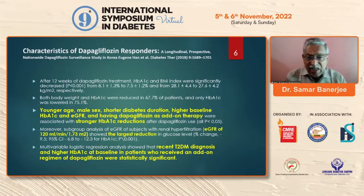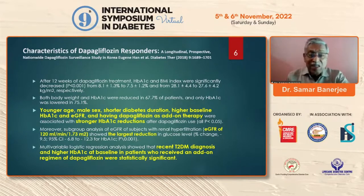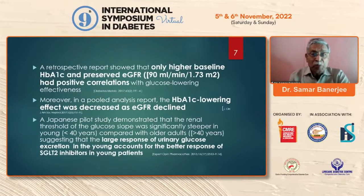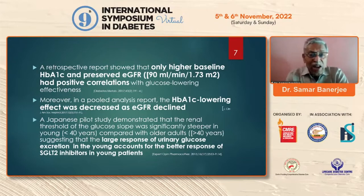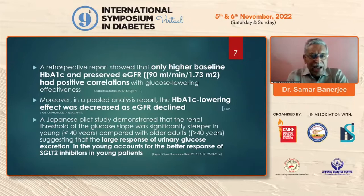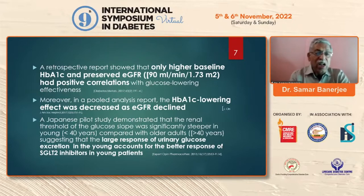Multivariate logistic regression analysis showed that recent type 2 diabetes diagnosis — meaning if you start early — and higher A1C level with add-on therapy had better results. Another retrospective study showed that only higher baseline A1C and preserved eGFR up to 90 had positive correlation with glucose lowering. In a pooled analysis, A1C-lowering effect decreased as eGFR declined. A Japanese pilot study showed that the renal glucose threshold slope was significantly steeper in younger patients below age 40 compared to older adults, suggesting a larger urinary glucose excretion response accounts for better SGLT2 inhibitor response.